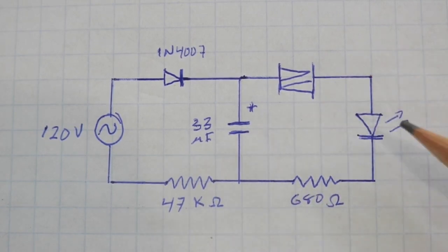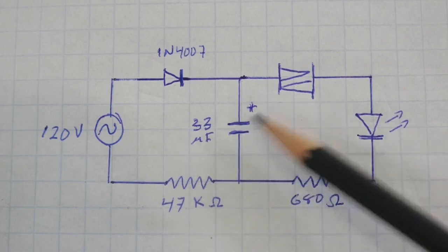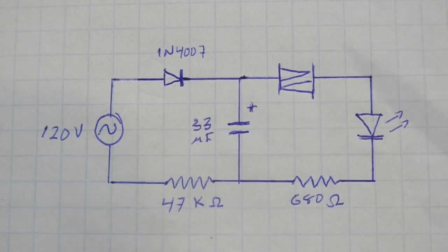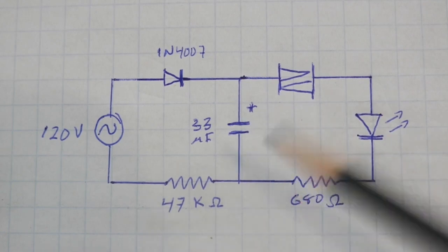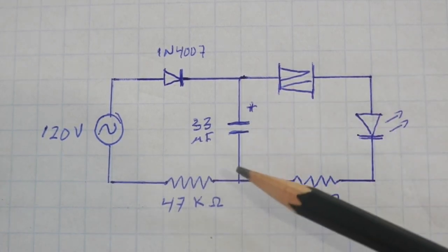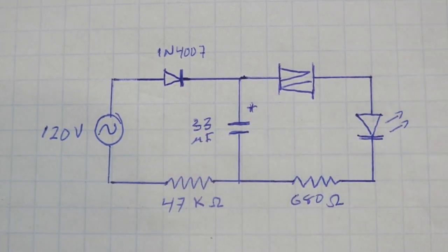When the current is around one milliamp or less, the DIAC opens again, and the capacitor, whose voltage is now close to zero, will start to fill again and the voltage will increase and the cycle repeats. Therefore, we will have oscillations. The LED will turn on and off.